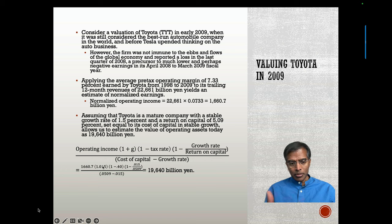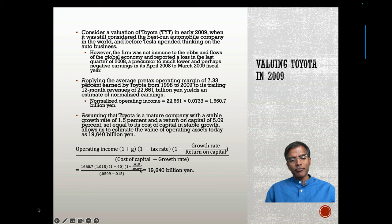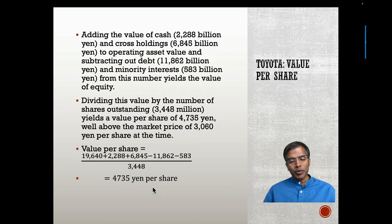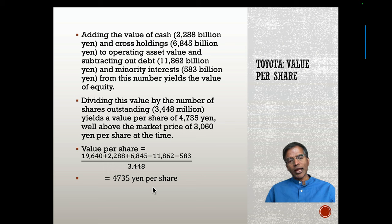I'm growing it at 1.5% in perpetuity. The tax rate for Japanese companies at that time was 40%. Because I want to keep growing at 1.5% with a 5% return on capital, I have to reinvest about a third of my money every year — the numerator is my free cash flow to the firm. Discounted back at the cost of capital minus the growth rate, using the terminal value equation, I get a value today of 19.64 billion yen. To get from firm value to equity, I add cash and crossholdings, then subtract debt and minority interest, and divide by the number of shares — getting a value per share of 4,735 yen, well above the market price at that time. This reflects normalized earnings.